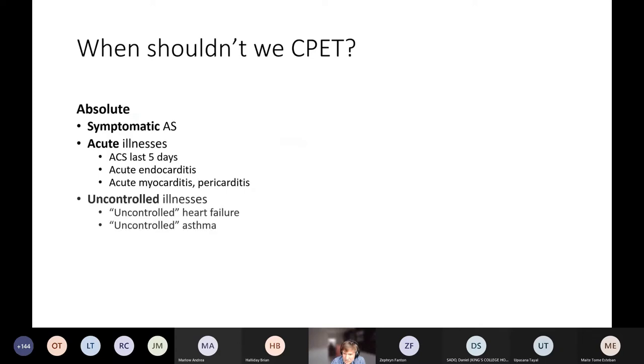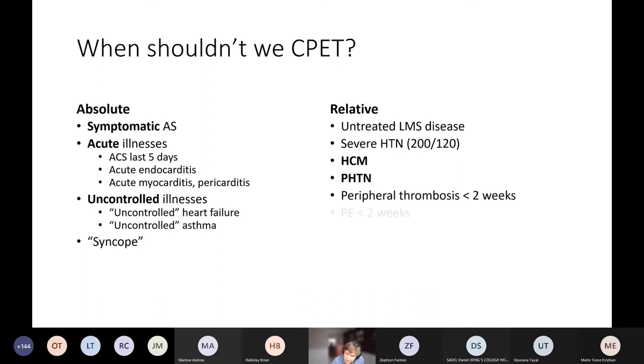So when shouldn't we CPET? Most of the situations are pretty obvious. They're the acutely unwell and people with uncontrolled illnesses such as heart failure, but the big one that we must always remember is symptomatic aortic stenosis. That's the one where you really shouldn't be putting them on a treadmill. The relative contraindications list is a bit funnier because it actually includes a lot of diagnoses that we routinely do CPET for, like hypertrophic cardiomyopathy and pulmonary hypertension. But the reason this list exists is to help guide you to decide the kind of cases where maybe you should be thinking about doing supervised CPETs because these patients are just a little bit more risky.